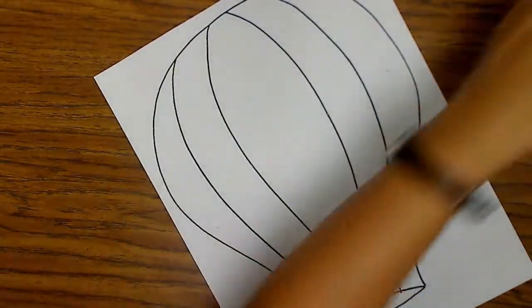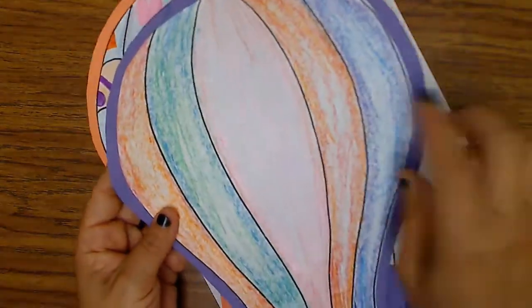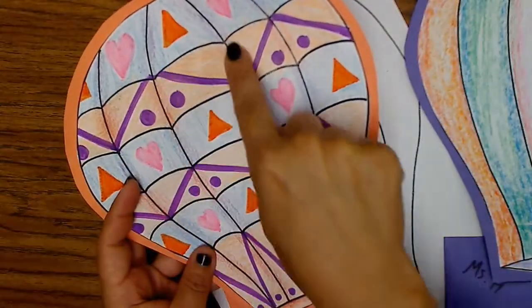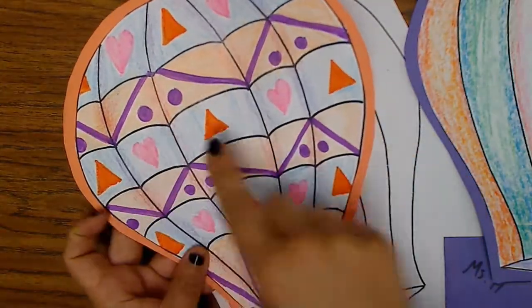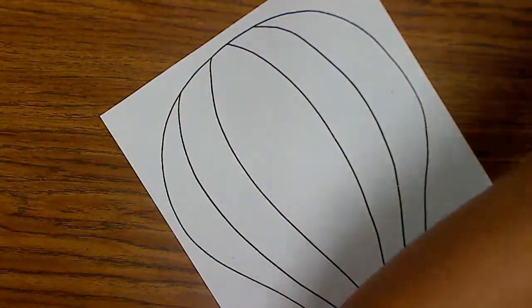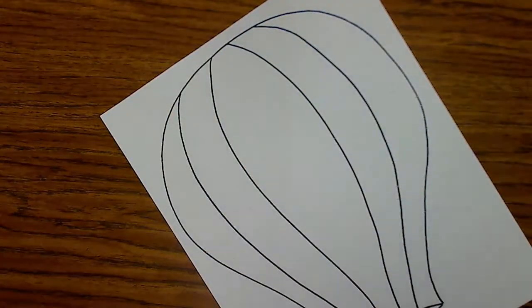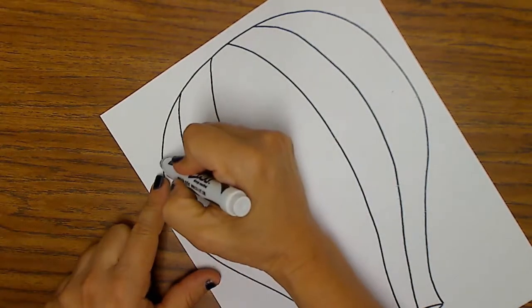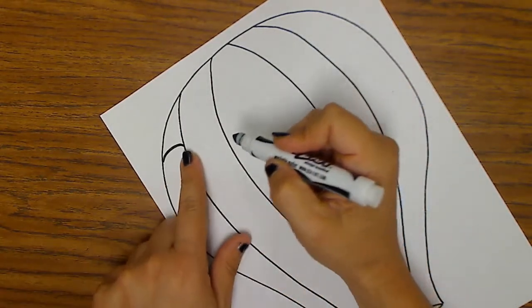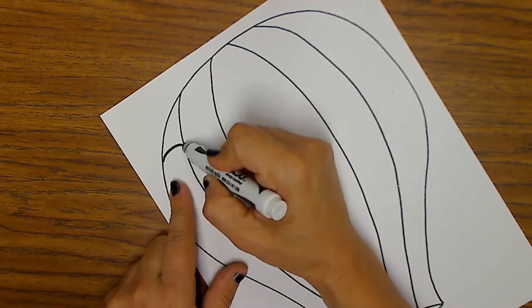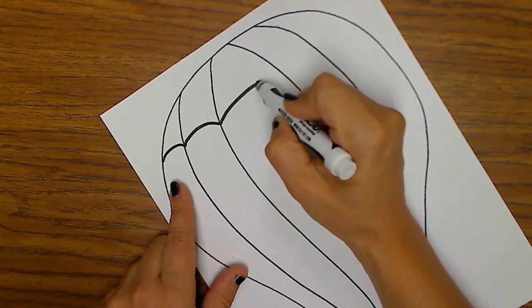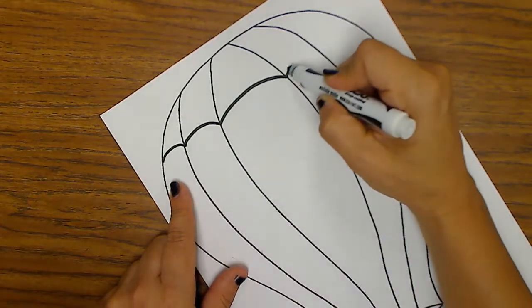If you want to do the scalloped look - see how this one has straight lines but this one has a little scallop kind of like a spider web - take your marker, any color, start on one edge and make a little flat rainbow to the same height. Then go to the next line, make another little rainbow, the next one is a big one.